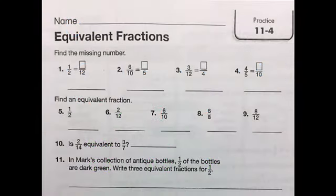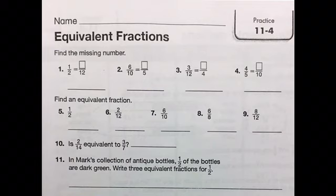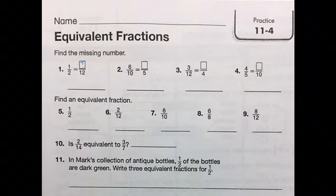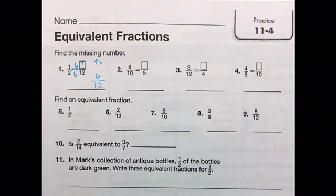Flip to practice 11-4 in your packet; pause the video and start it back up when you're there. The first set of directions says find the missing number. Like an input-output table: two to twelve is going up, so multiply. Two times six equals twelve, so multiply by six over six. One times six equals six and two times six equals twelve — six twelfths and one half are equivalent fractions. Try numbers two, three, and four on your own; pause the video then come back to check.